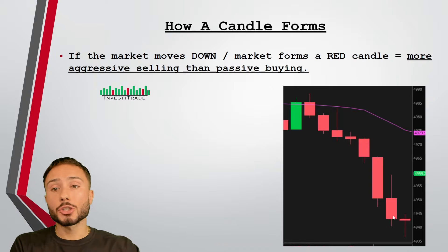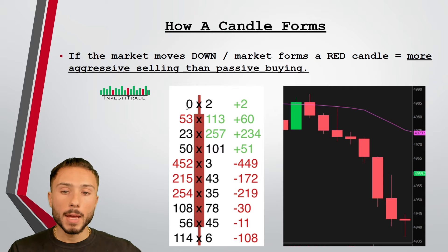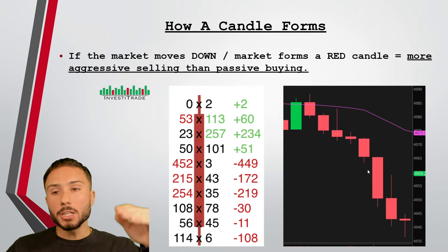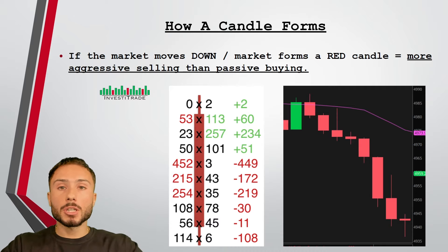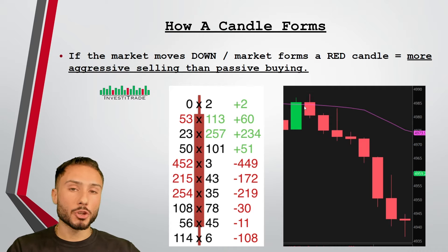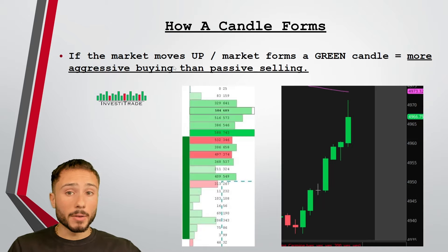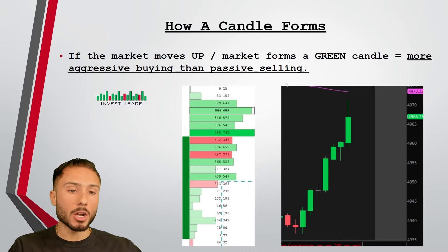If you really want to dig deeper, why these candles form is because of the volume getting transacted behind the scenes. Essentially, look at a candle as a closed curtain — we don't know what's going on behind the stage, but as soon as the candles are opened and we can see the driving forces, we're going to know what's going on behind the scenes, and that is when the best trades can be put on. If the market moves up and forms a green candle, that means there are more aggressive buyers than passive sellers, regardless of the time frame — you can validate this by looking at the volume transacted on that candlestick chart.